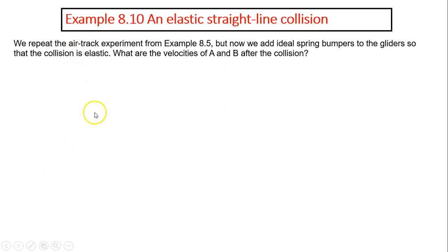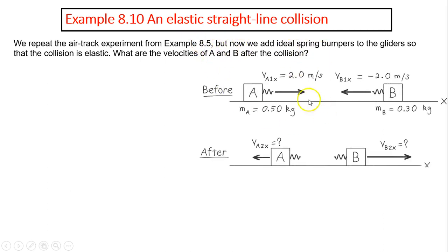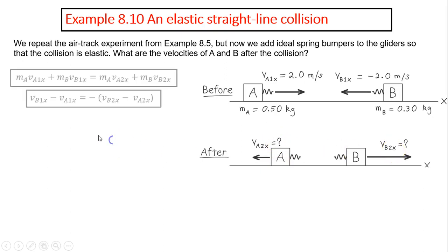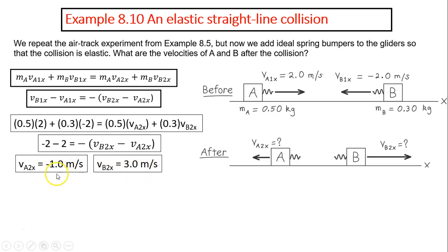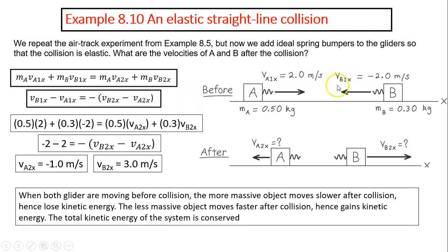For the air track example from before, now we add an ideal spring so the collision is elastic. We use conservation of momentum and the relative velocity equation instead of conservation of kinetic energy, because kinetic energy involves V squared which makes it more complicated. For one-dimensional elastic collisions, the relative velocity is the same magnitude but opposite. Substituting the numbers and solving, VAx equals negative 1 m/s and VBx equals positive 3 m/s. The relative velocity before was 4 and after is negative 1 minus 3 equals negative 4 — same magnitude, opposite direction.